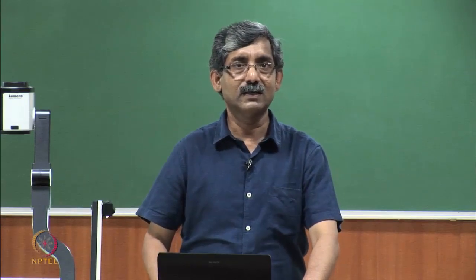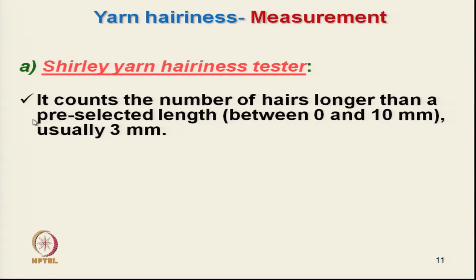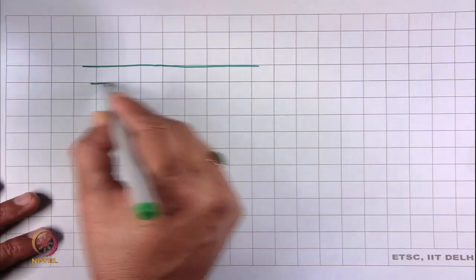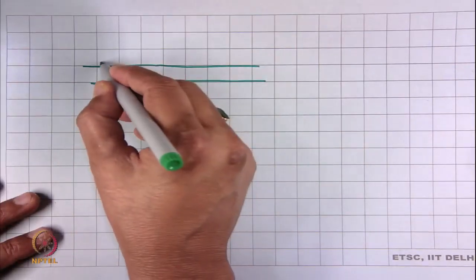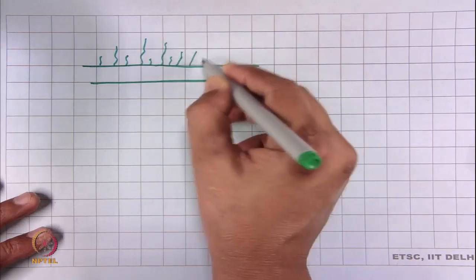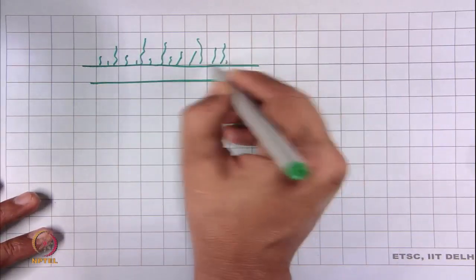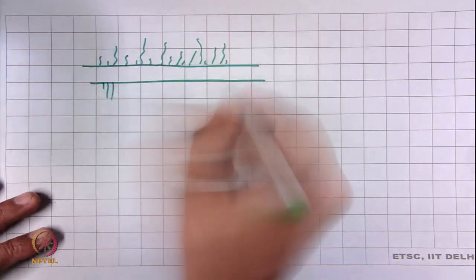Now we will discuss the exact measurement technique. The first is the Shirley yarn hairiness tester, where we count the number of hairs longer than a pre-selected length between 0 to 10 millimeters — usually 3 millimeters. Now suppose this is a yarn with hairs of different lengths on both sides, and we want to measure the number of hairs.